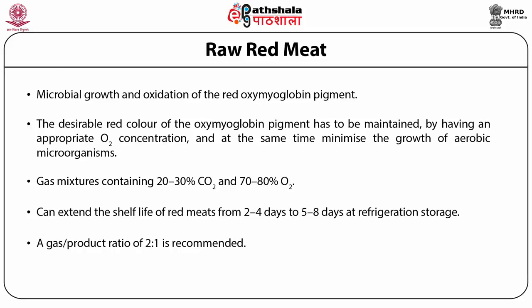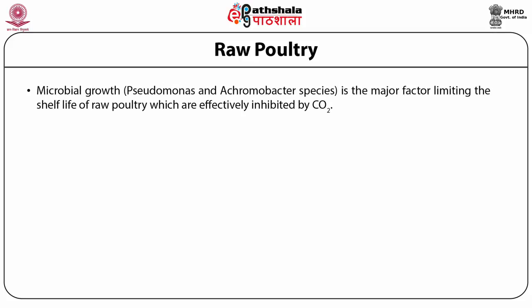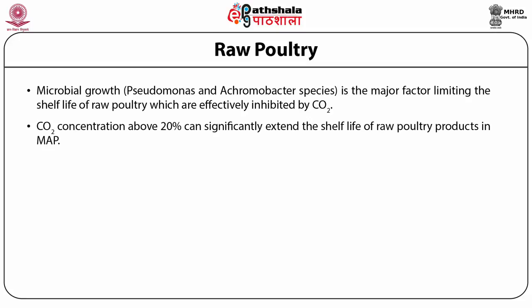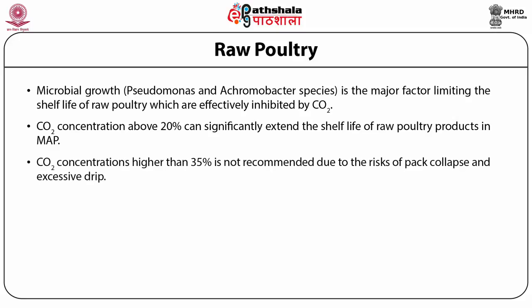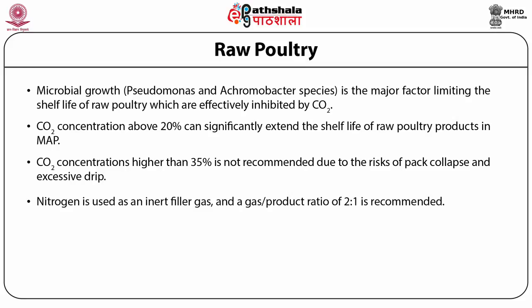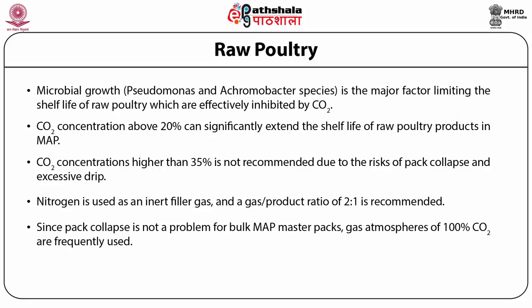Microbial growth — particularly growth of Pseudomonas and Enterobacter species — is the major factor limiting the shelf life of raw poultry, which are effectively inhibited by carbon dioxide. The inclusion of carbon dioxide in MAP at a concentration in excess of 20% can significantly extend the shelf life of raw poultry products. Carbon dioxide concentrations higher than 35% in the gas mixture of retail packs are not recommended due to the risk of pack collapse and excessive drip. Nitrogen is used as an inert filler gas, and a gas-to-product ratio of 2:1 is recommended. For bulk MAP master packs where pack collapse is not a problem, gas atmospheres of 100% carbon dioxide are frequently used. It is advisable to maintain refrigeration temperature as some pathogens are not inhibited by carbon dioxide.